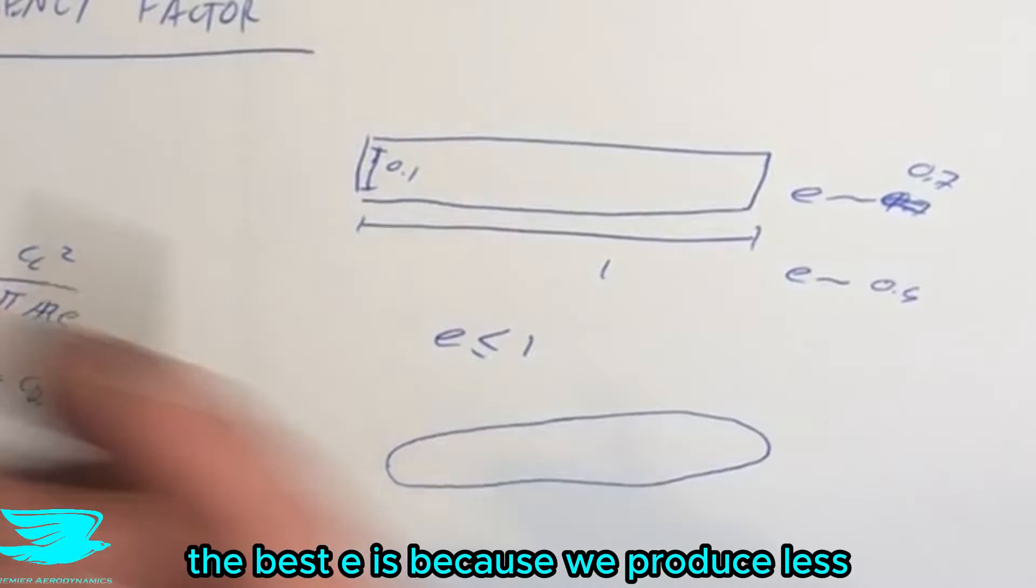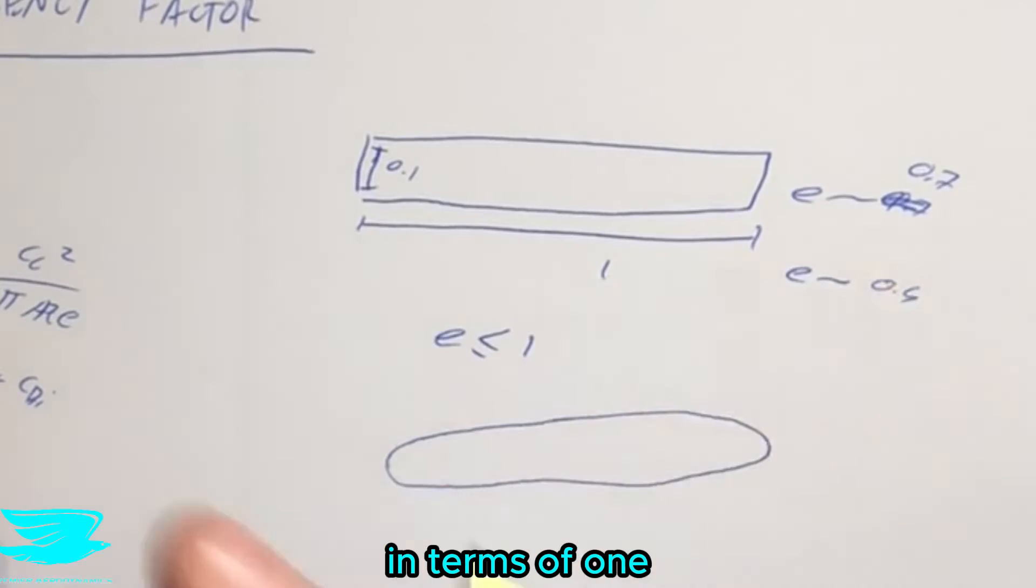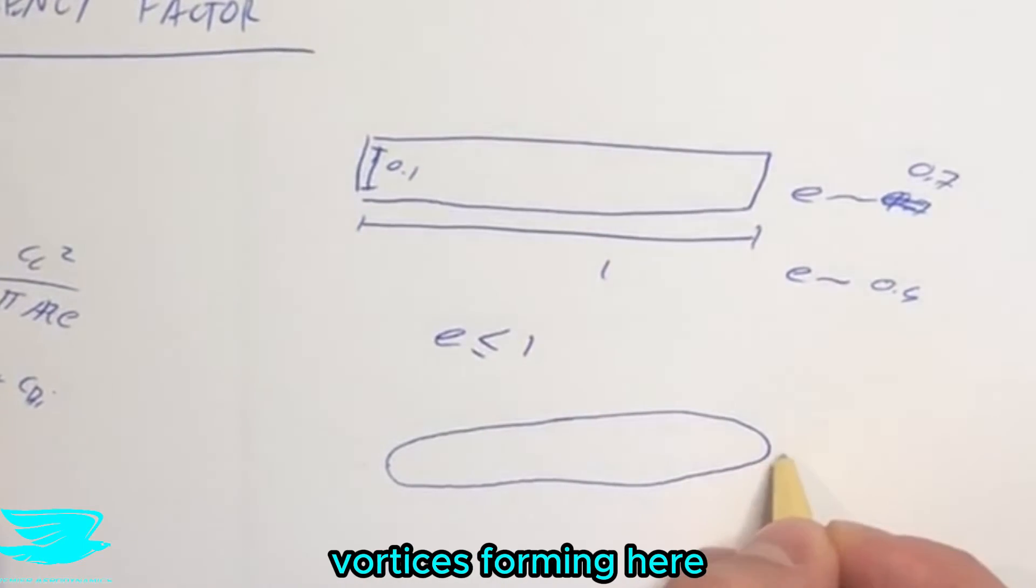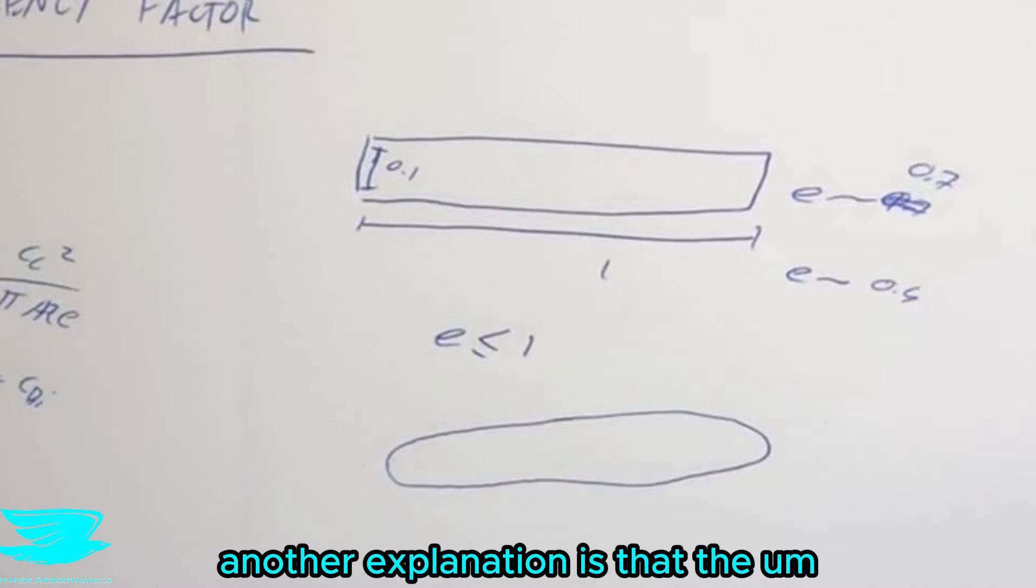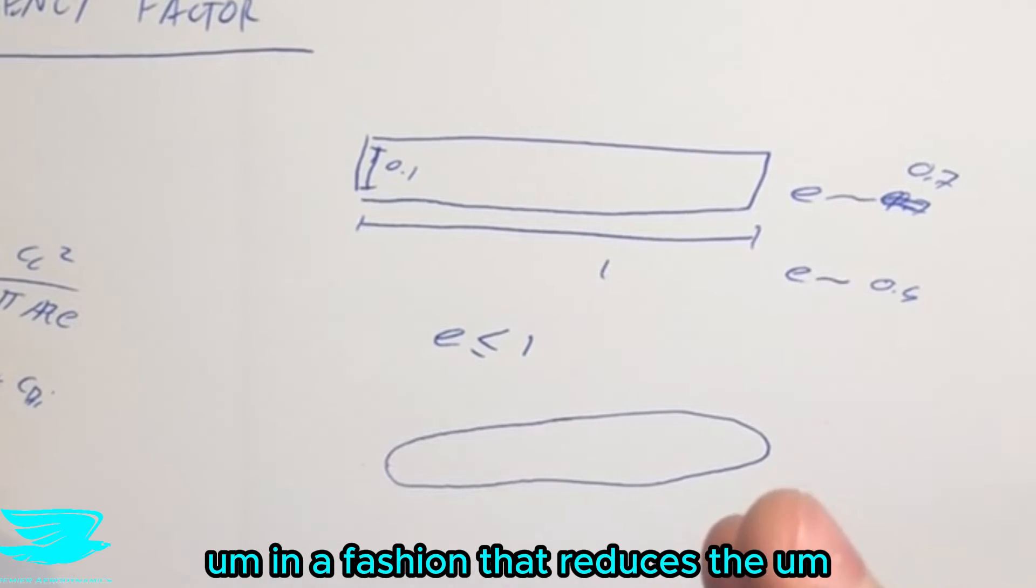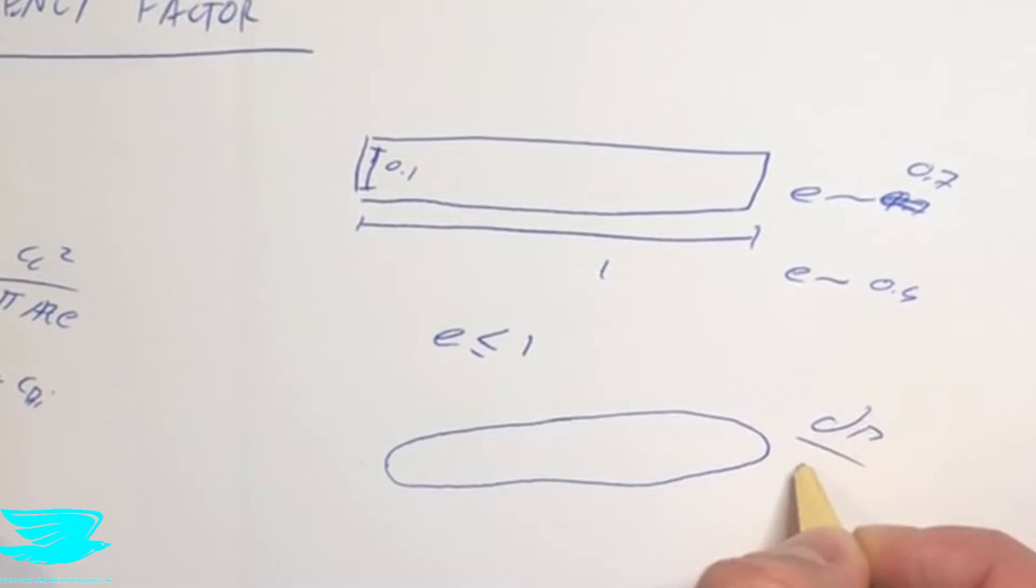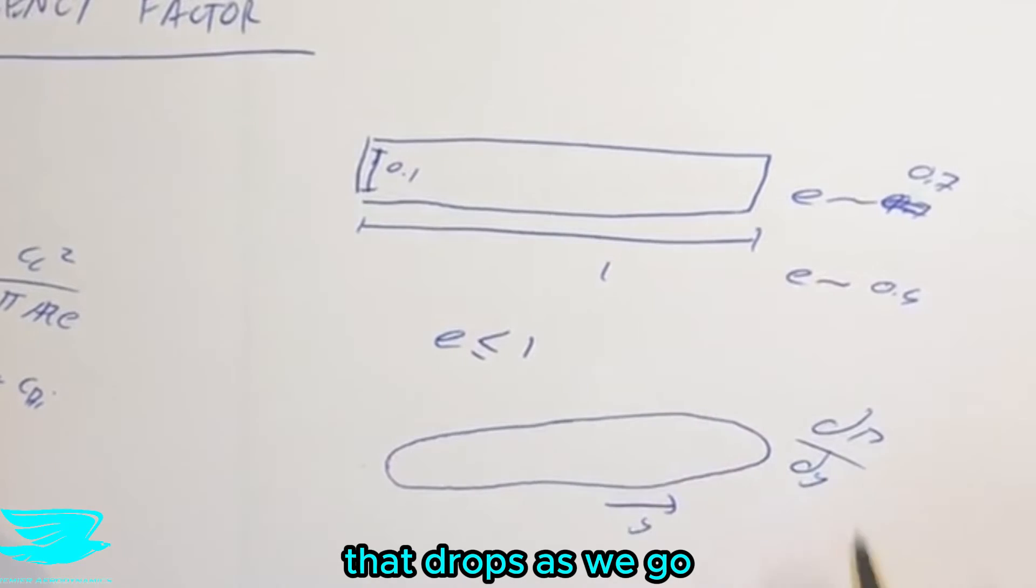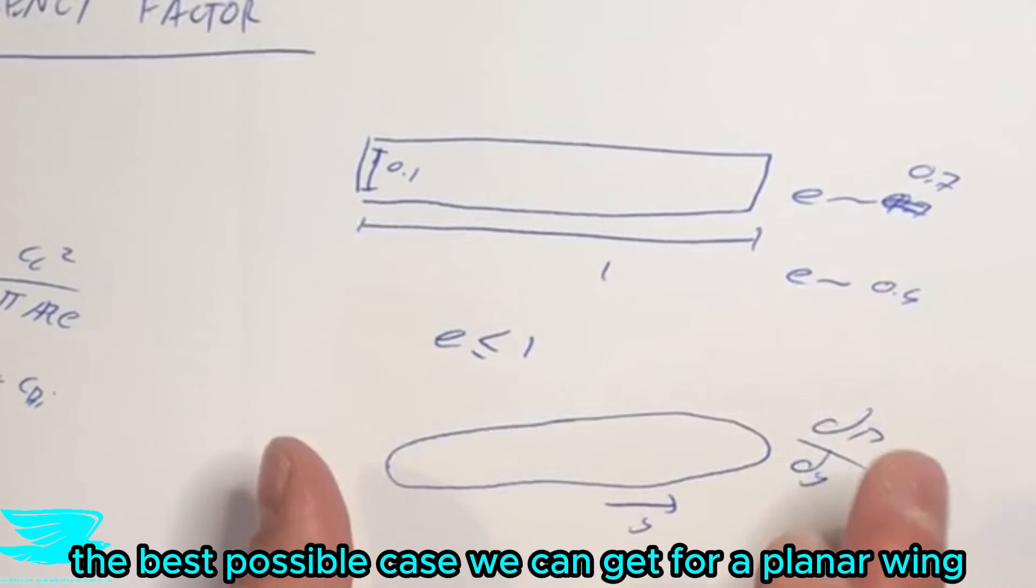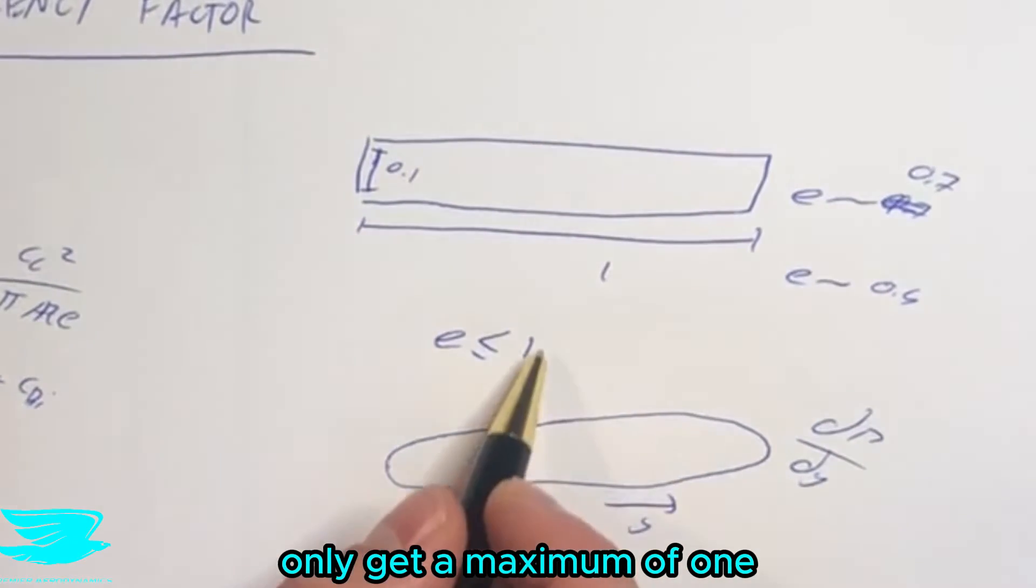And the reason why this has the best E is because we produce less and less lift as we get to the wing tip, which means we get smaller vortices forming here. Another explanation is that the circulation as we go to the wing tips is reducing in a fashion that reduces the induced drag. So the gradient of the change in circulation as we go in the direction Y drops as we go, so that's quite nice. Anyway, that is the best possible case we can get for a planar wing.